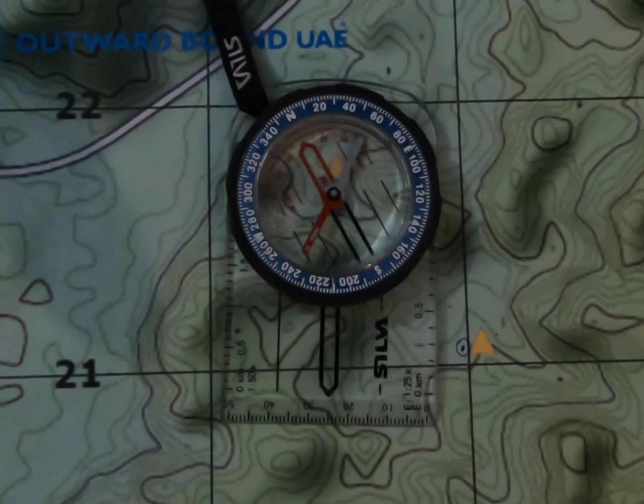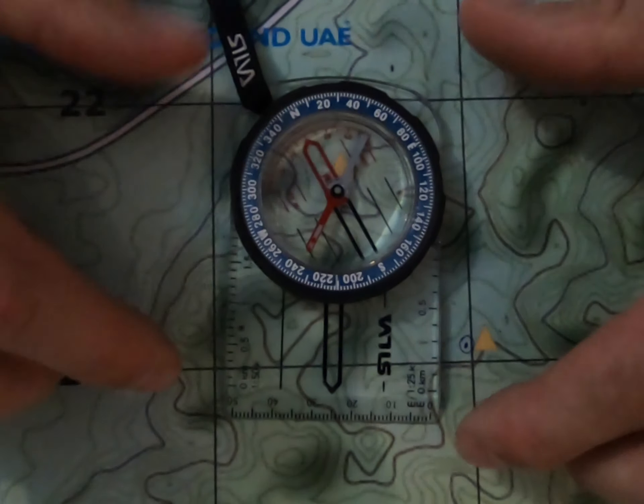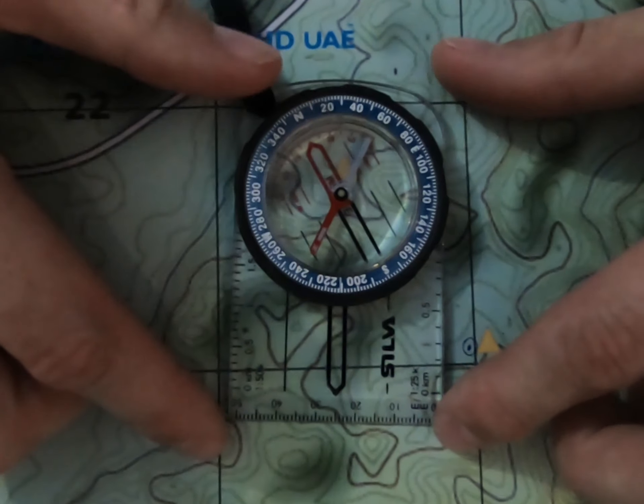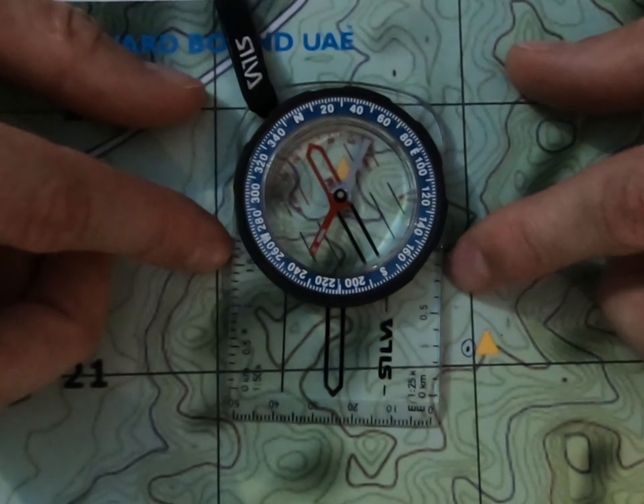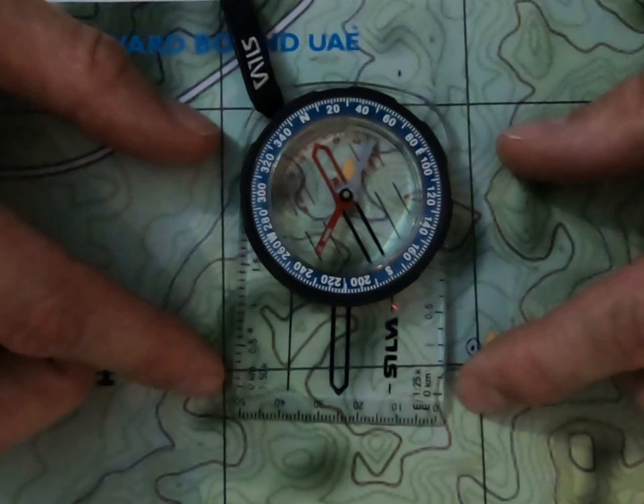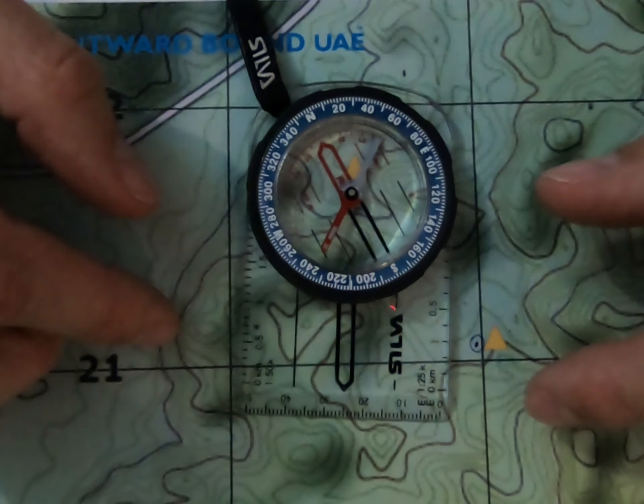So let's take a look at the magic that is a compass. First of all, this main bit that sits on is the base plate, and you'll notice that down either side we have two scales. These are great for working out distances on different scales of map.